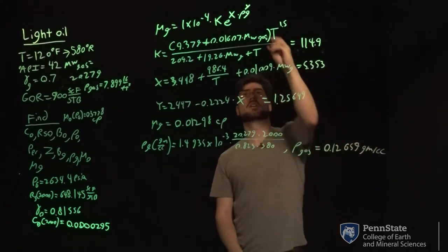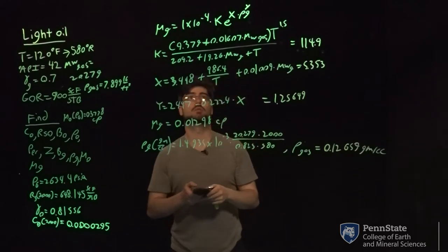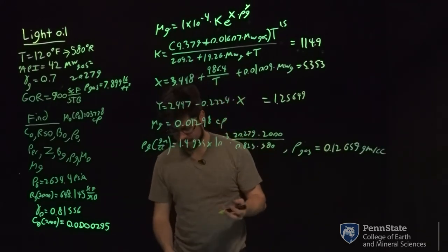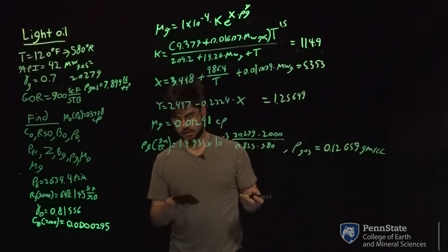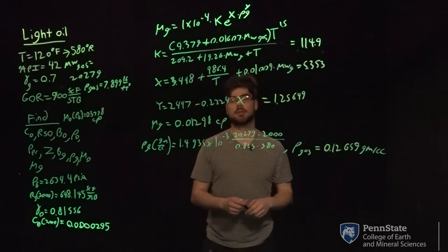And so this will give us a rho of gas which equals 0.12659 grams per cc, which this will be plugged into up here. So with having those constants as it is, you should get this. I got 0.012617, which is pretty close to that. So that's how you find viscosity of a gas below bubble point.